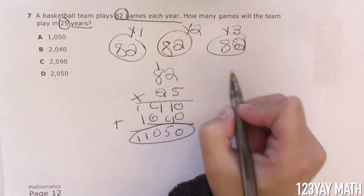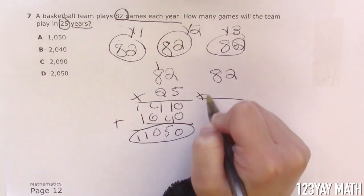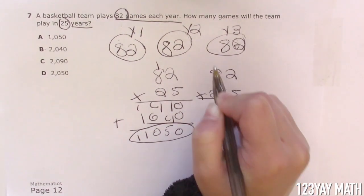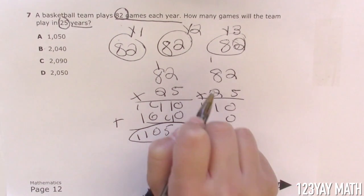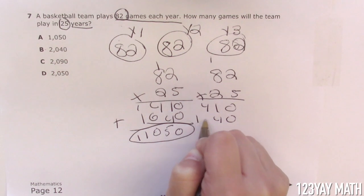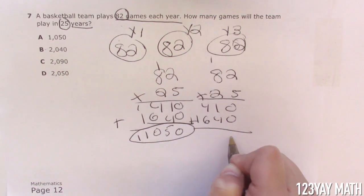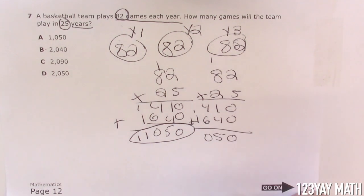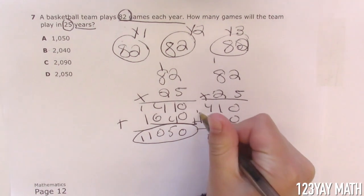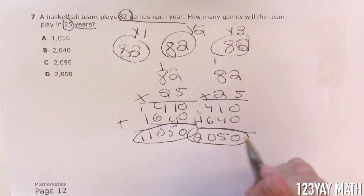Let's try this again. 82 times 25. 10, 41. Don't forget to drop that 0. 4 and 16. Now let's add that again. 0, 5, 10. Oh, there's where I made the mistake. That should be 2, not 11. There should be our answer.